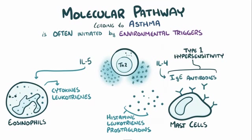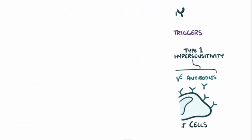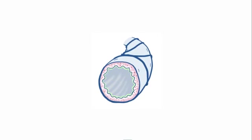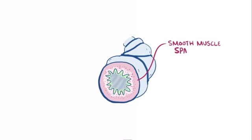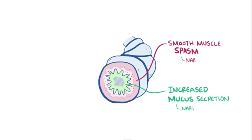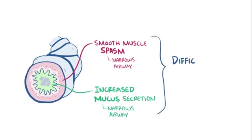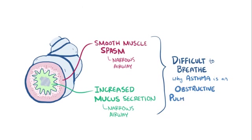This leads to two series of events. Early on, minutes after exposure to the allergen, smooth muscle around the bronchioles start to spasm, and there's increased mucus secretion. This narrows the airways, making it difficult to breathe, and this is why asthma is considered to be a type of obstructive pulmonary disease.